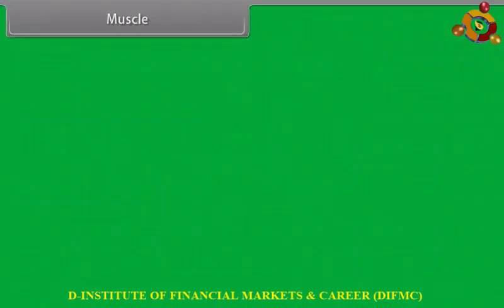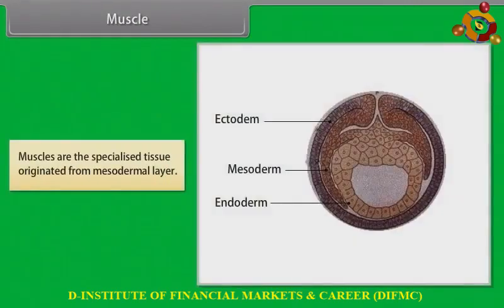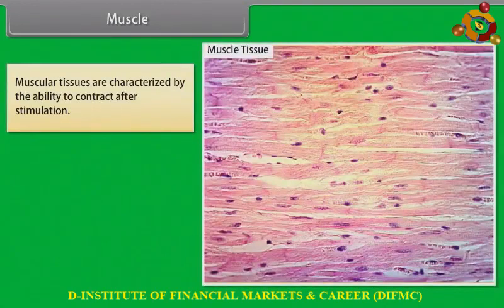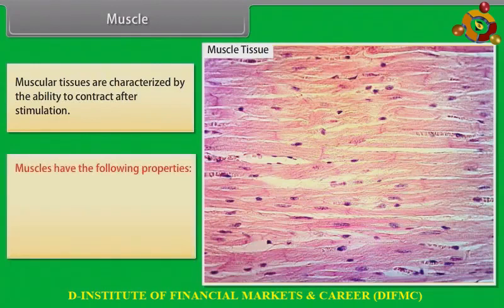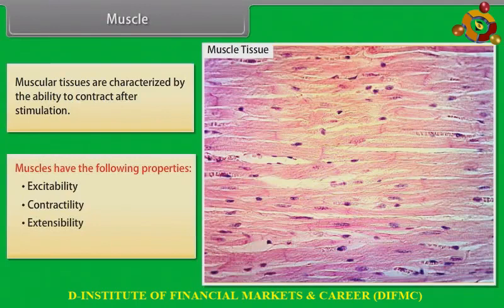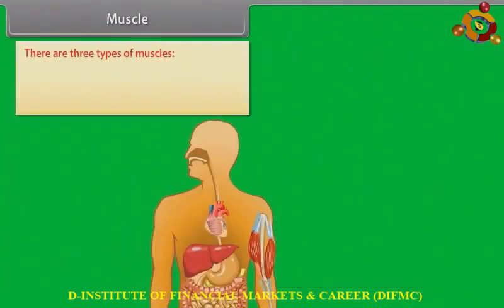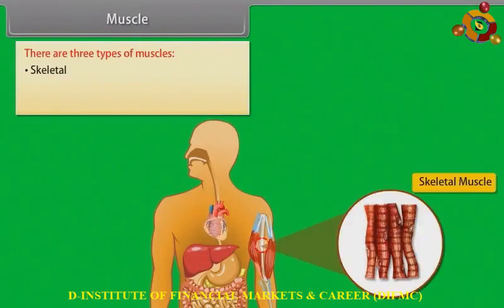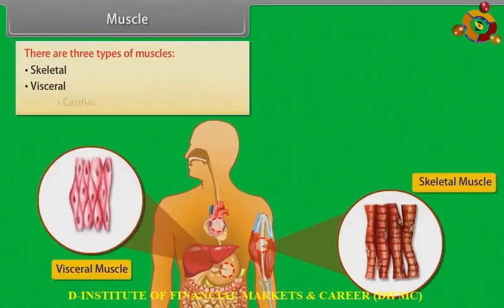Muscle. Muscles are the specialized tissues originated from the mesodermal layer. Muscular tissues are characterized by the ability to contract after stimulation. Muscles have the following properties: excitability, contractility, extensibility, and elasticity. There are three types of muscles: skeletal, visceral, and cardiac.